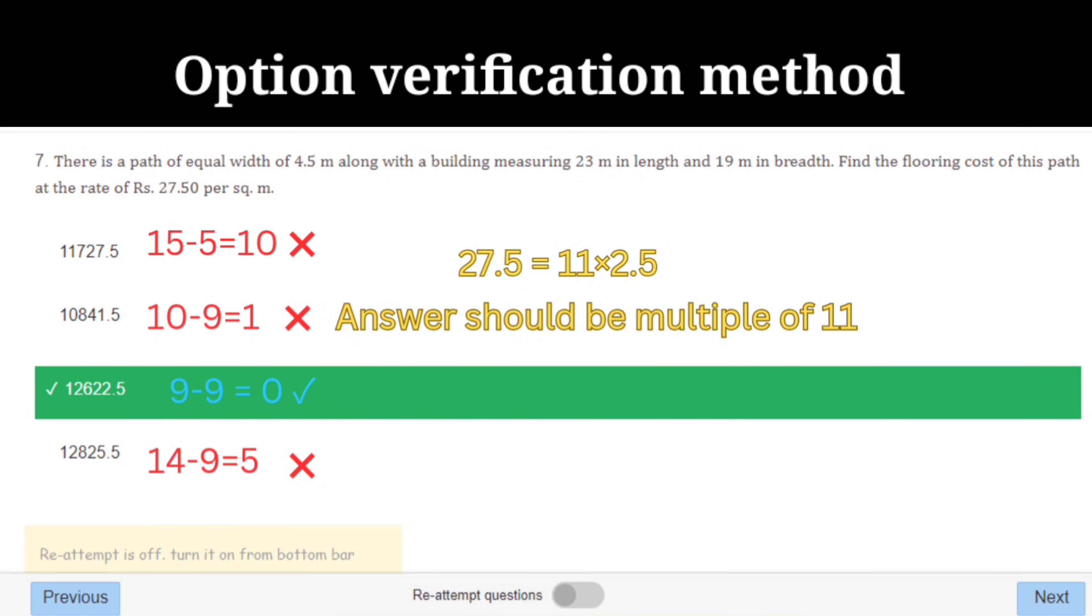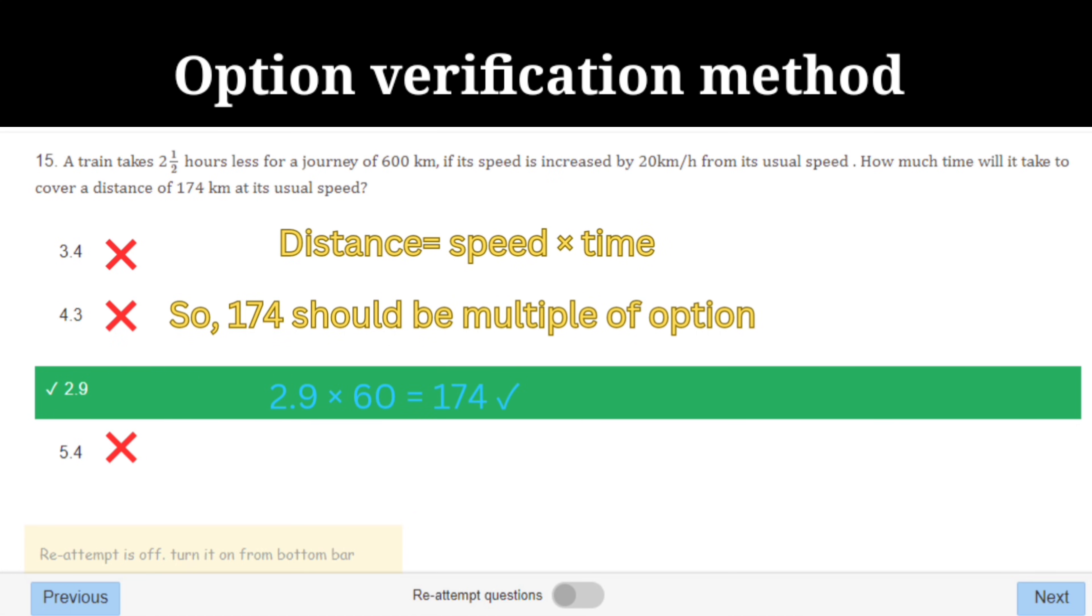Look at the sum: find the flooring cost of this path at the rate of 27.5 per square meter, which means the final answer should be a multiple of 27.5. We can write 27.5 as 11 into 2.5, so the final answer should be a multiple of 11. Just verify 11 multiple in the options and you will get the answer. Moving on to the next.